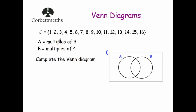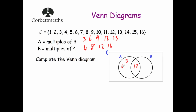So A is the multiples of 3. The multiples of 3 between 1 and 16 are: 3, 6, 9, 12, 15. The multiples of 4 are: 4, 8, 12, 16. We'll start with the middle of the Venn diagram — anything in A and B, a number that's a multiple of both 3 and 4. That's 12. So we put 12 in the middle. The left section (A only) gets 3, 6, 9, and 15.